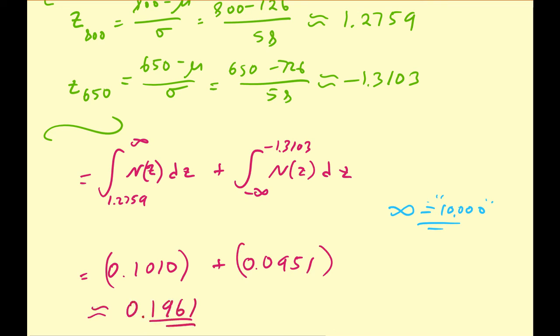And that's a quick rundown of how you solve probability distribution problems with the normal distribution by first converting to the standard normal distribution and finding all your probabilities there. We'll do some more examples in the upcoming videos.